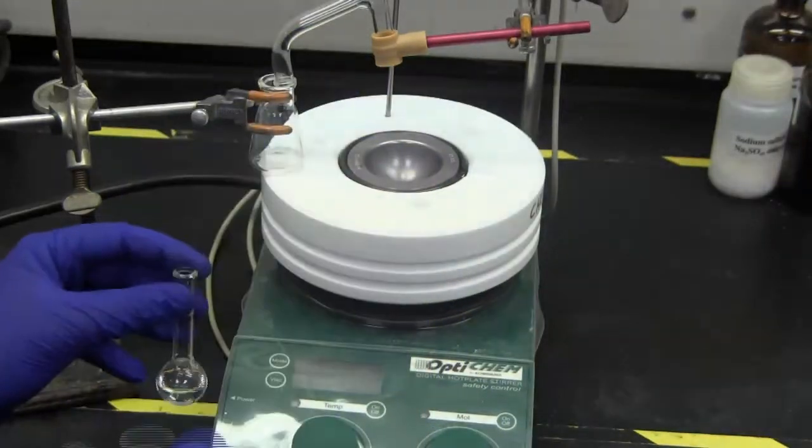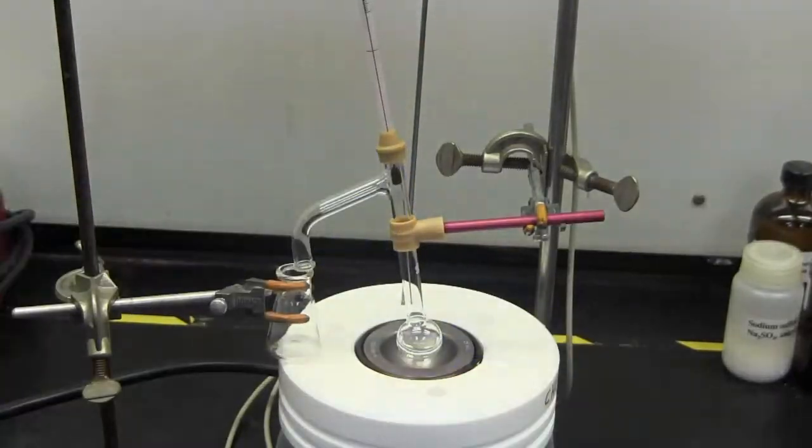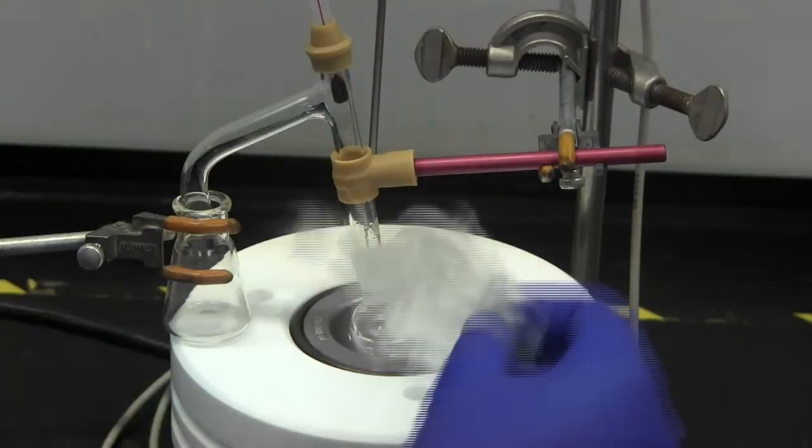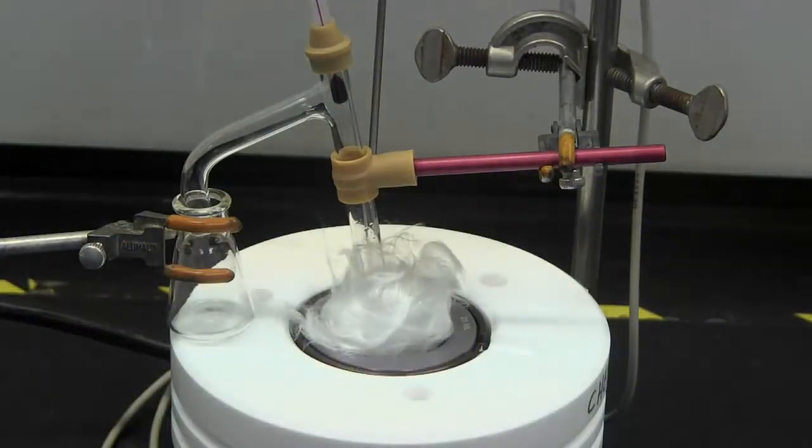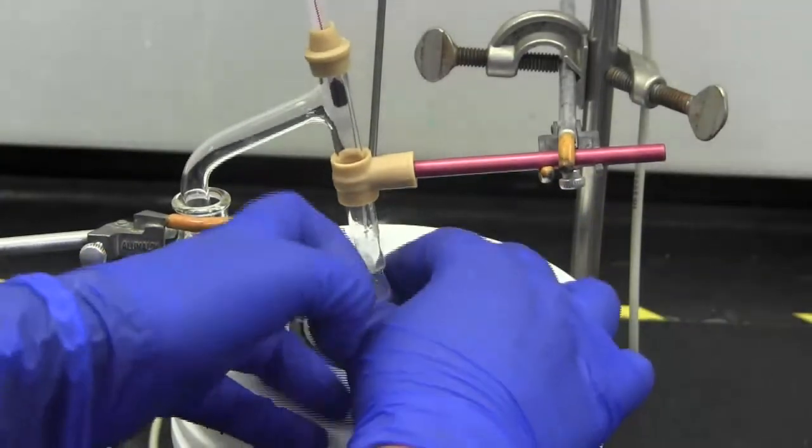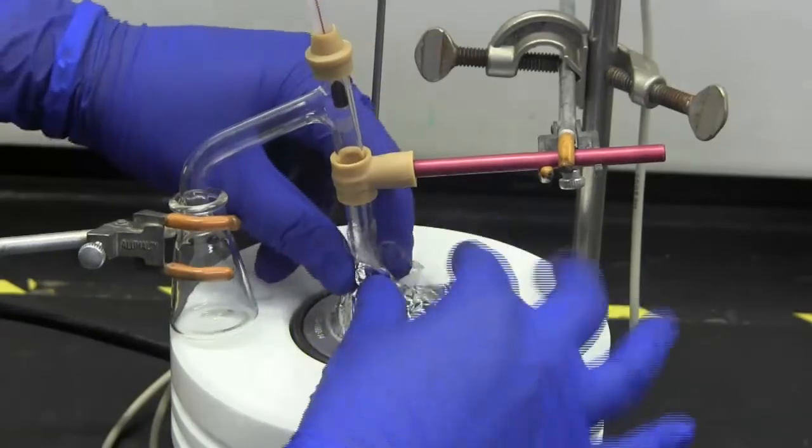Now place your sample in the round flask and insert it into the rubber fitting to complete the setup. Wrap the glassware loosely with aluminum foil. Make sure that there is no foil underneath the flask. The goal is to trap as much heat as possible.